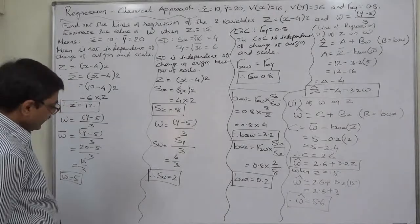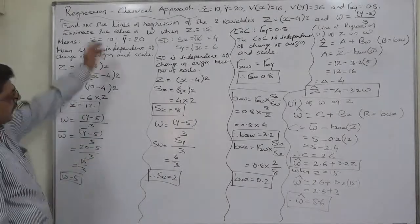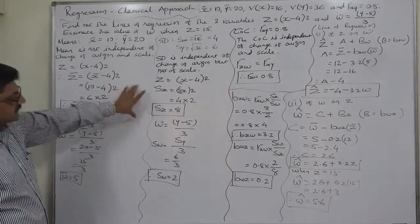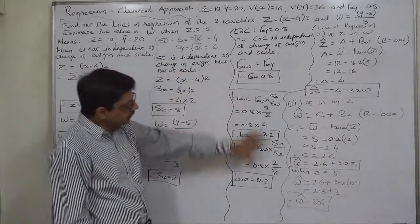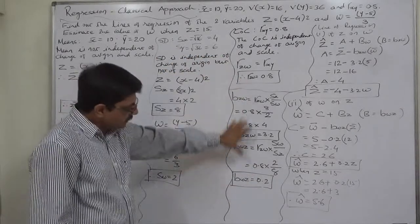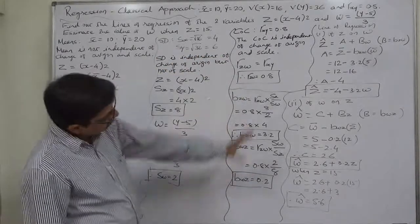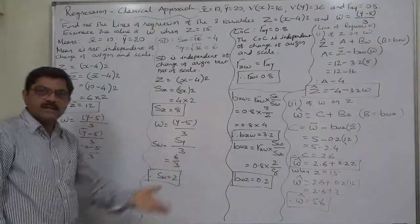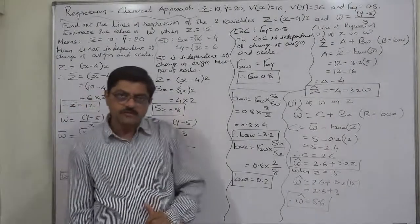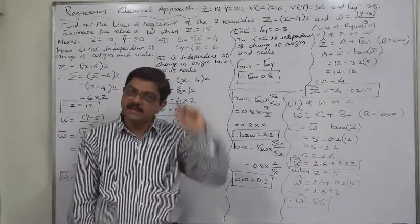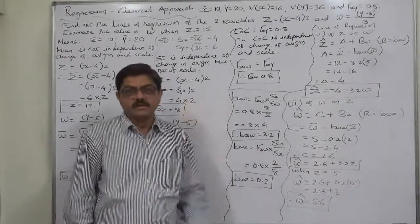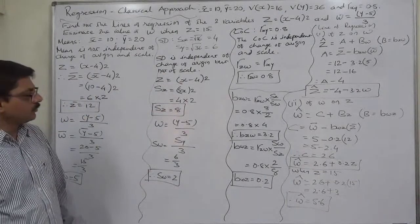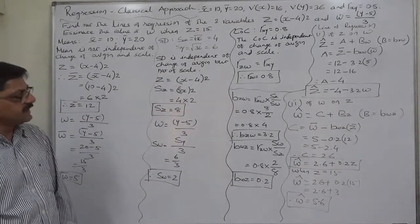In this case we studied how to find the means, standard deviations, coefficient of correlation, and coefficients of regression of new variables Z and W, which are the results of change of origin and scale in the original variables X and Y. I hope you are able to understand this case.